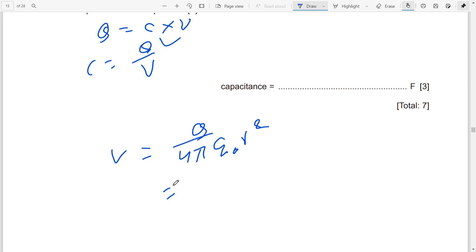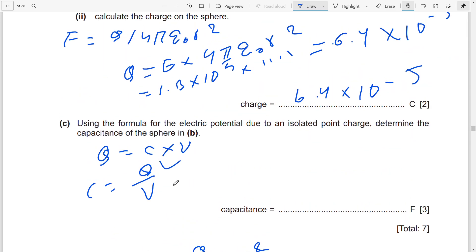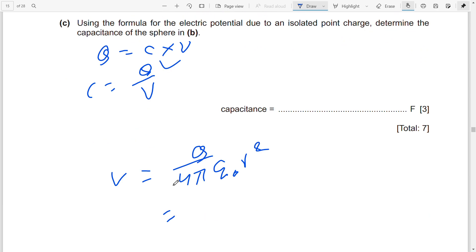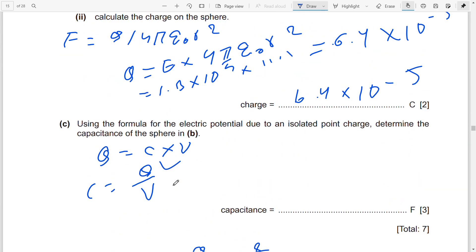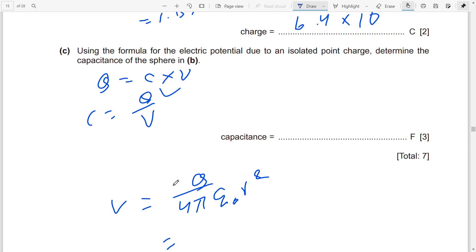What is Q? We have Q = 6.4 × 10⁻⁵ coulombs. So V = 6.4 × 10⁻⁵ over 4πε₀r. The epsilon naught value is 8.85 × 10⁻¹².